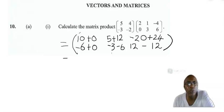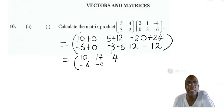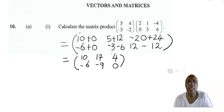So all we do now is simplify all the additions. Ten plus zero is ten. Five plus twelve is seventeen. And minus twenty plus twenty-four is four. For the second row: minus six plus zero is negative six. Minus three minus six is negative nine. And twelve minus twelve is zero. And this is the answer — this is how you multiply matrices.